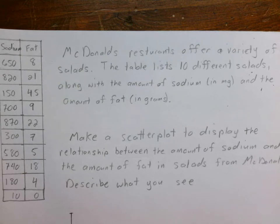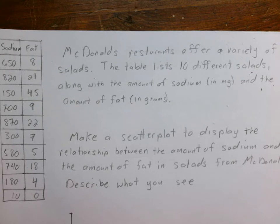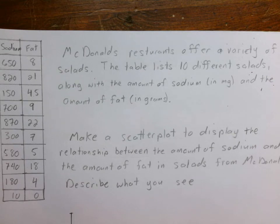At the top there it gives you the prompt. McDonald's restaurants offer a variety of salads. The table lists 10 different salads along with the amount of sodium in milligrams and the amount of fat in grams. Make a scatter plot to display the relationship between the amount of sodium and the amount of fat in the salads from McDonald's. Describe what you see.